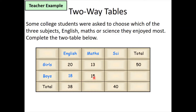You can do this for each of the missing boxes. For maths, I know that 13 girls like maths and 15 boys like maths, so the total — currently missing — must be 28. Reading horizontally for girls: 20 like English, 13 like maths. I don't know how many like science, but the total is 50, so I can work backwards to find it.